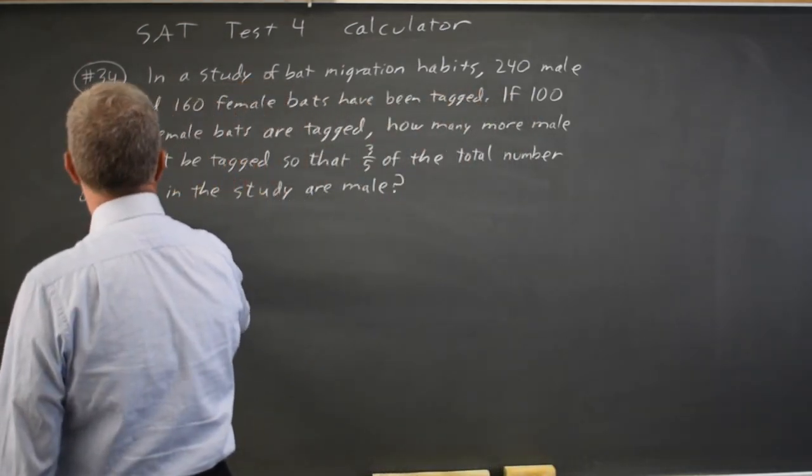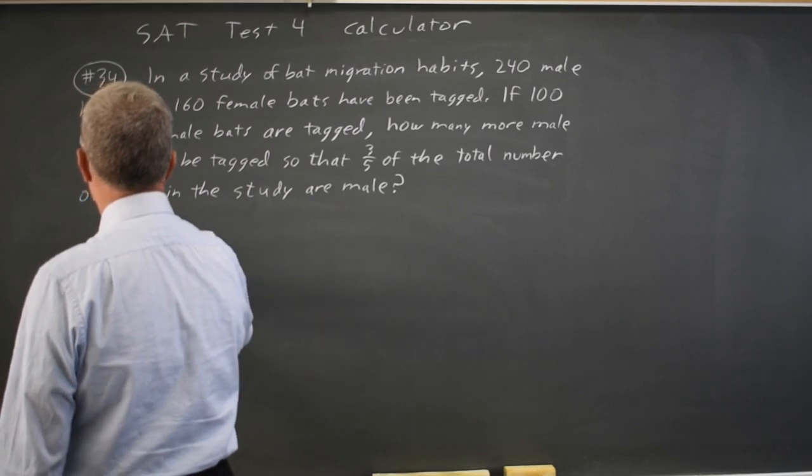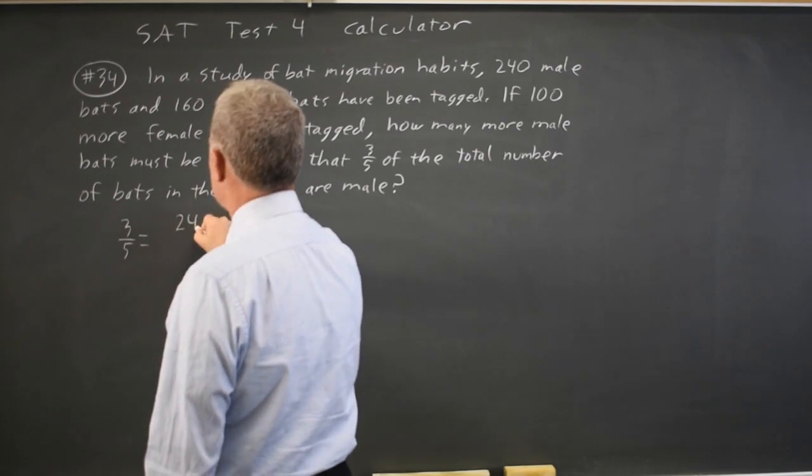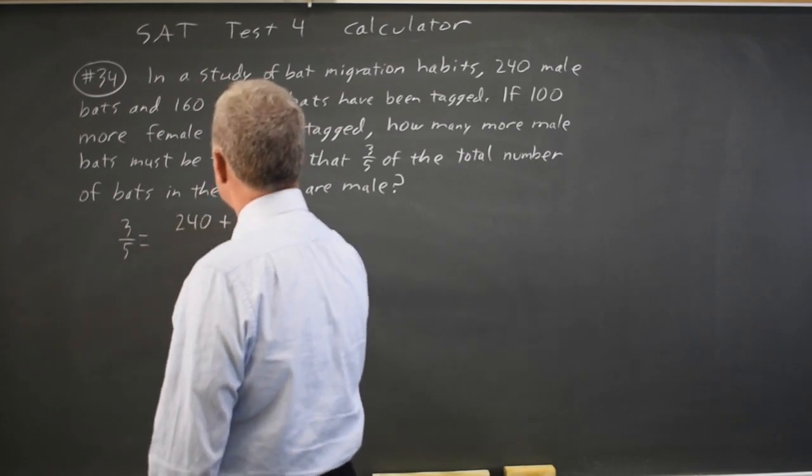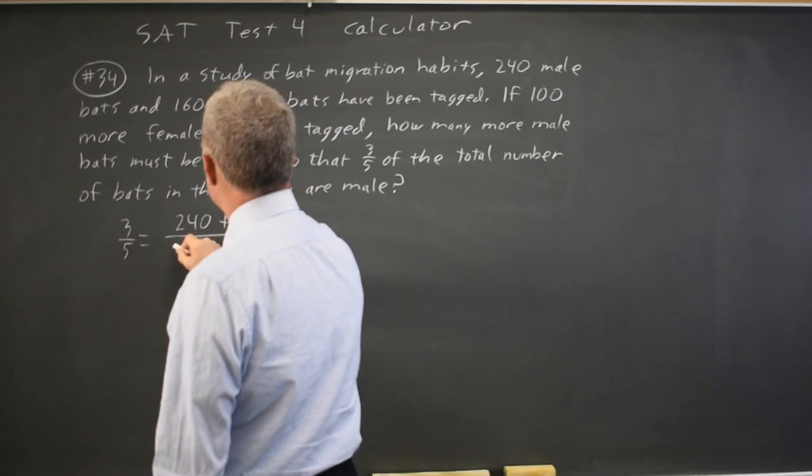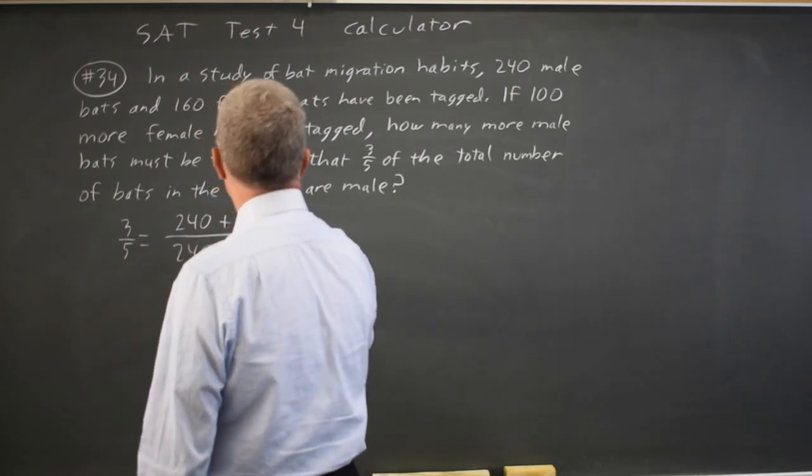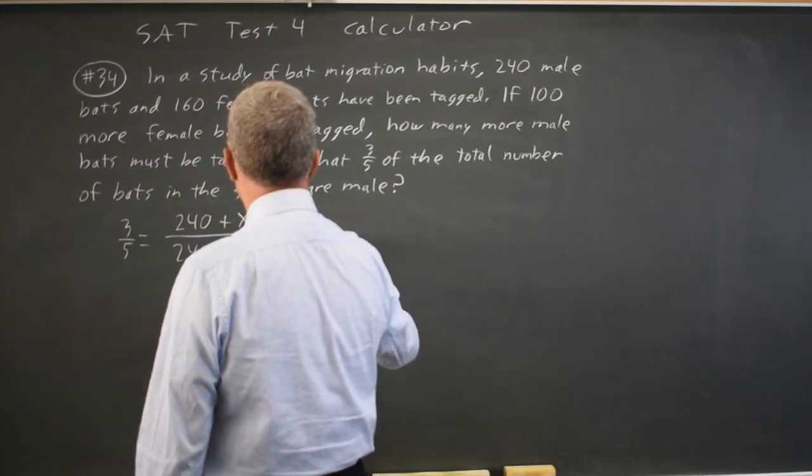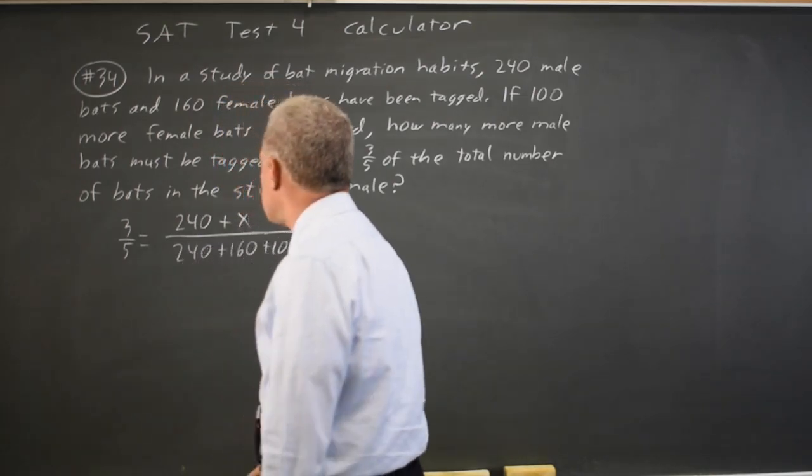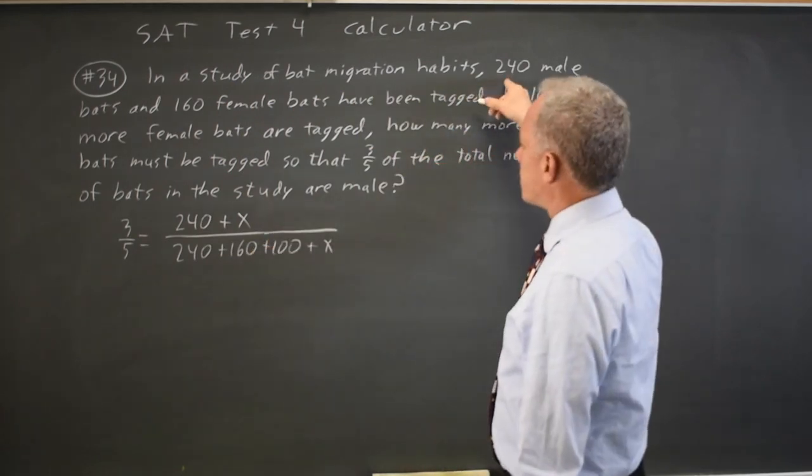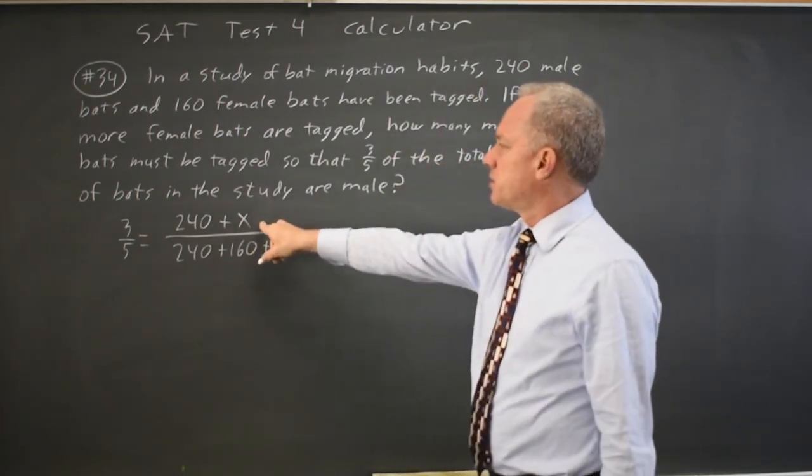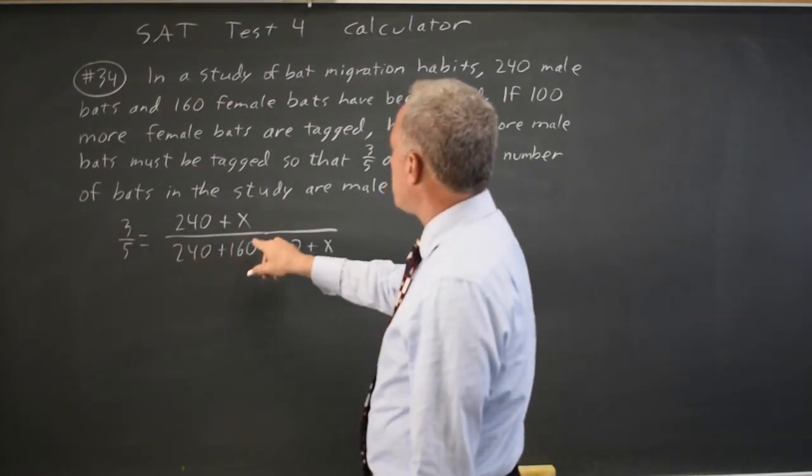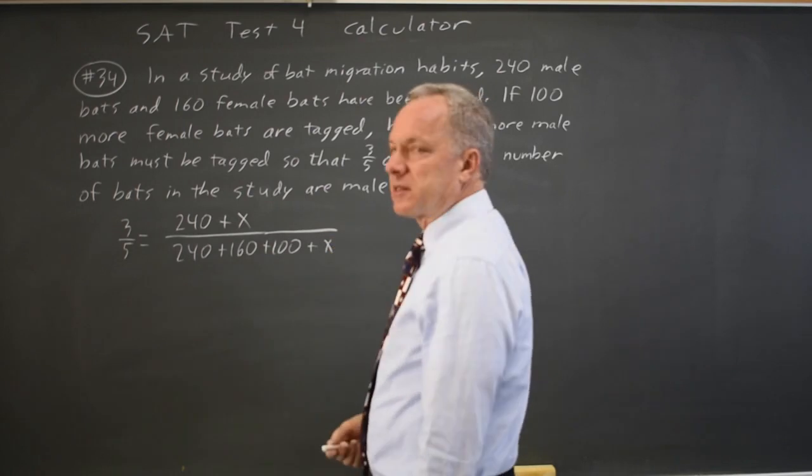And I am going to write three-fifths, which is the fraction of the total that are male, equals all our male bats, which is the 240 we already have plus I'm going to call it x, over the 240 plus 160 bats plus 100 more female plus x. So my numerator is the male bats, 240 that I started with and x that we still need. My denominator is all the bats: 240 male, 160 female, another 100 female and x male.